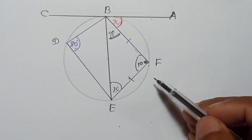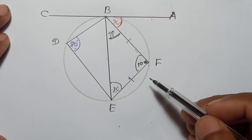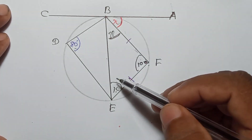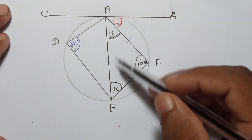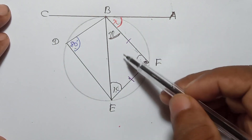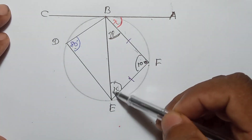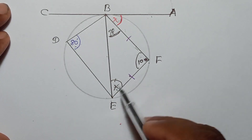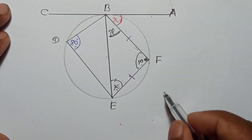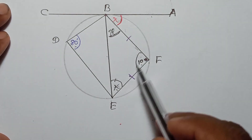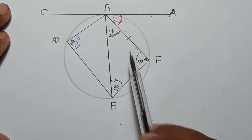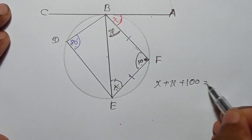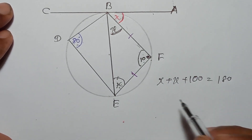In an isosceles triangle, the angles opposite the equal sides are also equal. BF and FE are the equal sides, so the angles opposite them are both equal to x. Now we can write the interior angle sum for triangle BFE: x plus x plus 100 equals 180.